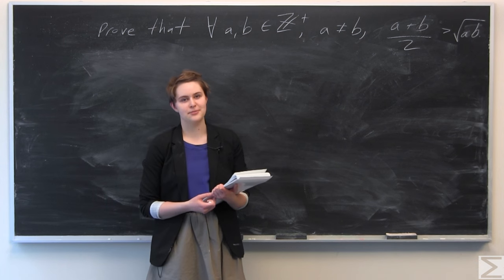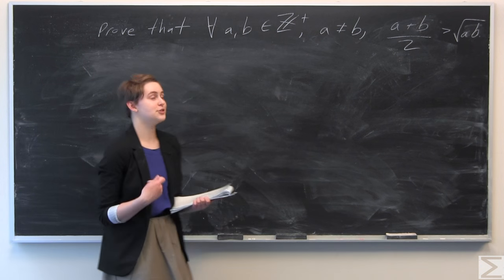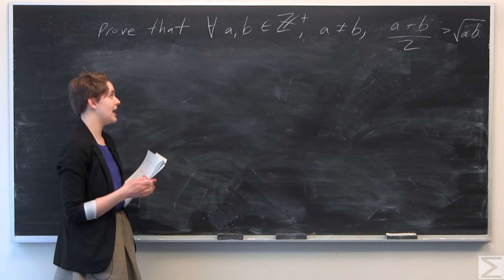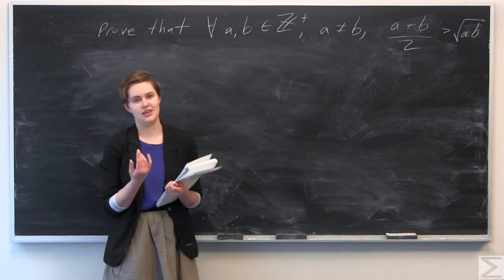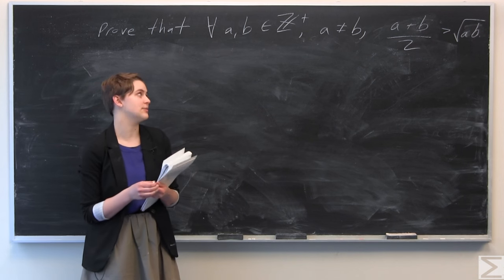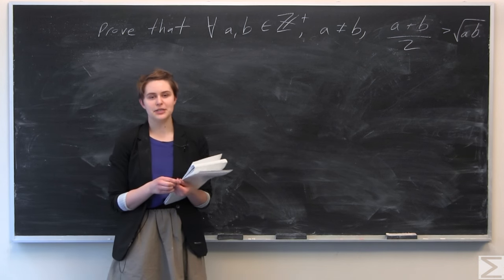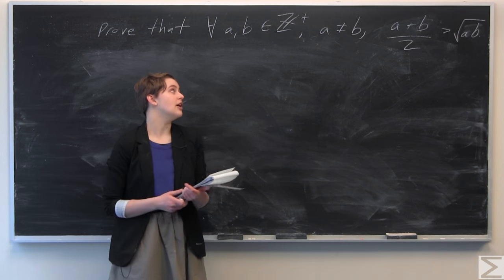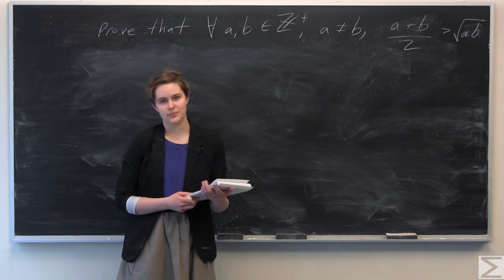This week's Advanced Knowledge Problem of the Week asked you to prove the following statement: that for all a and b in the positive integers, where a is not equal to b, a plus b over 2 is greater than the square root of ab.